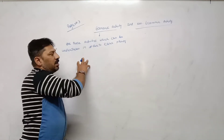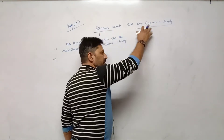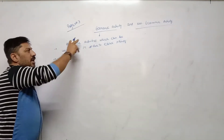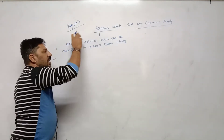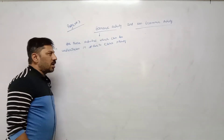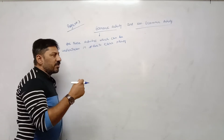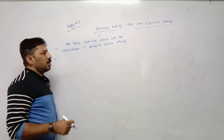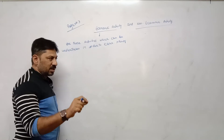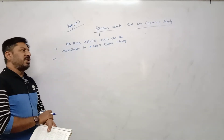Page number three: topic is economic activity and non-economic activity, which we have already done in OC chapter number one. Economic activities are those activities which can be undertaken in order to earn money or carry their livelihood. Any family that does any activity from which income is generated — such activities are called economic activities.